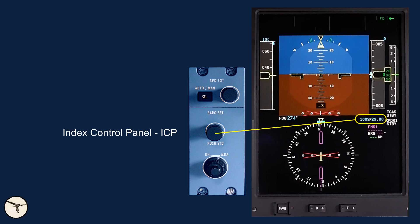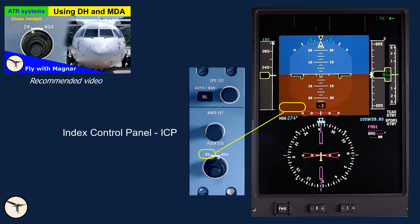The BARO SET button is used to set the barometric reference pressure for the altimeter. By pressing the button, we get standard reference. The DH-MDA selector is used to set minima for instrument approach. DH is used for ILS, when we use the radio altimeter as reference. MDA is used for all other approaches, when we use the barometric altimeter as reference.